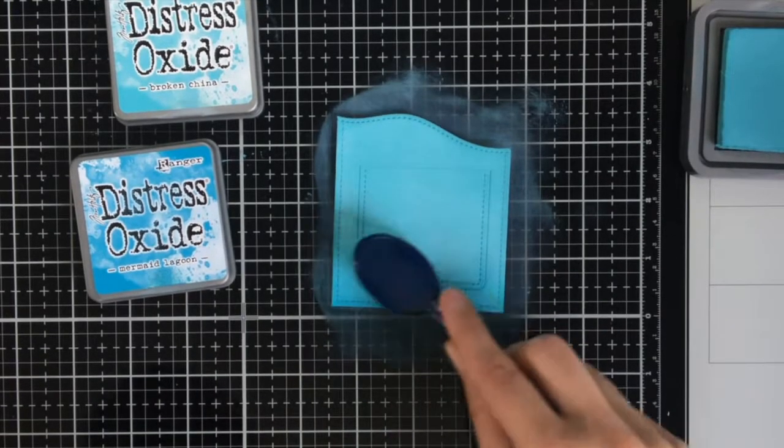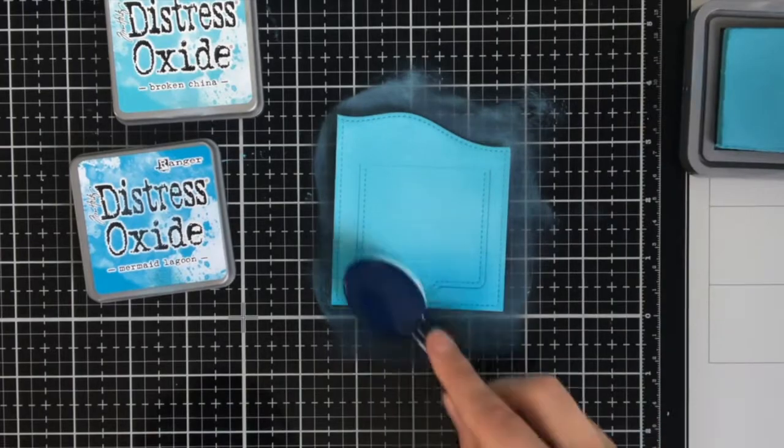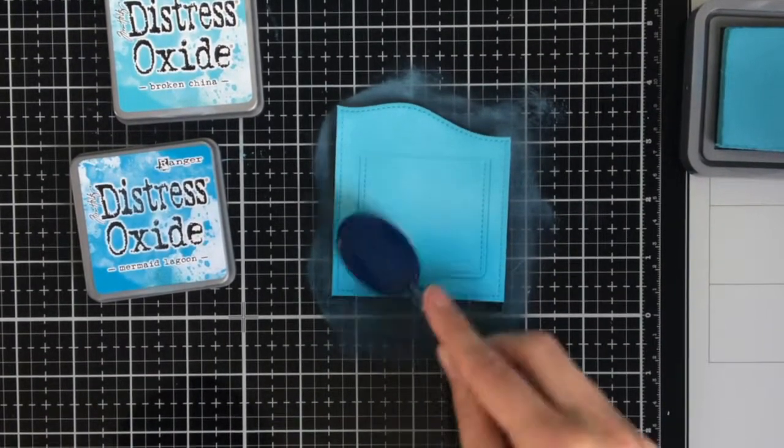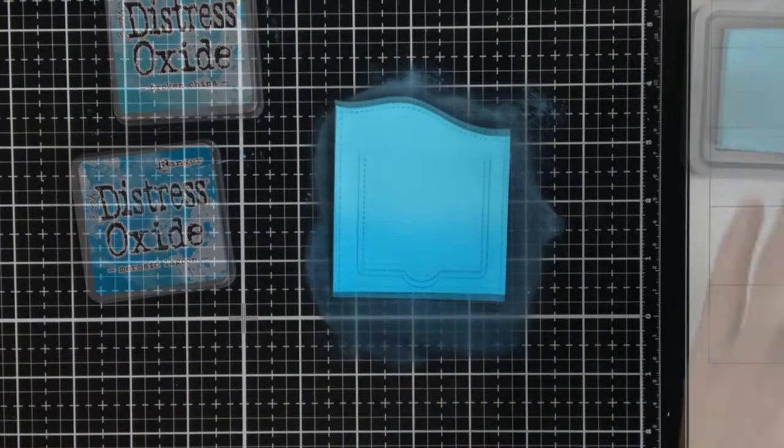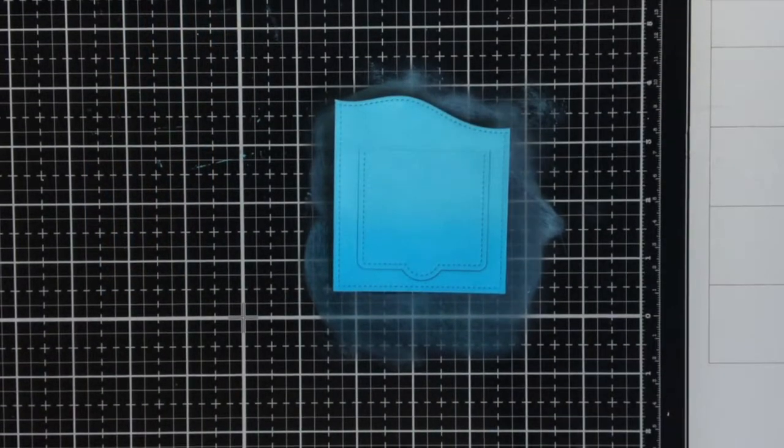And this panel is going to be the water on the card, so I'm going to ink blend it with Distress Oxide Ink, Broken China and Mermaid Lagoon. The Mermaid Lagoon I'm only using at the bottom of this panel to darken it up a little bit.